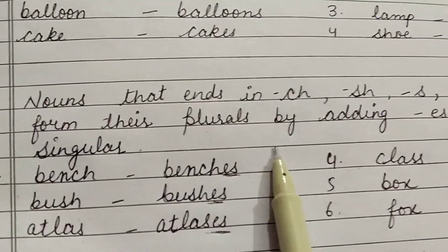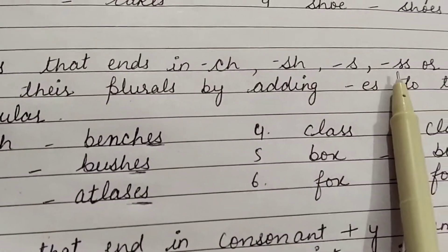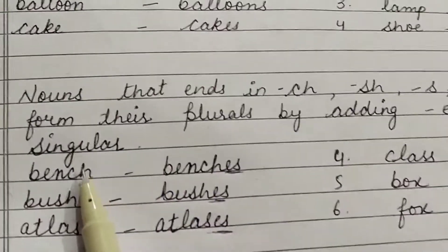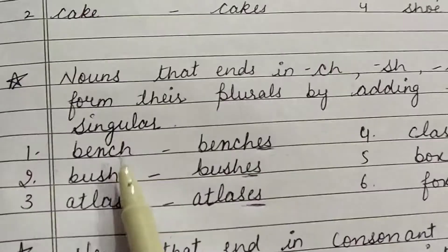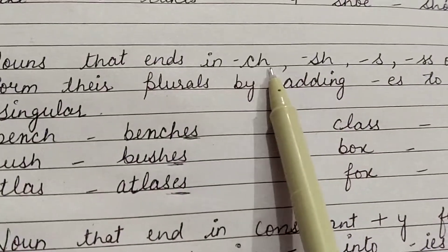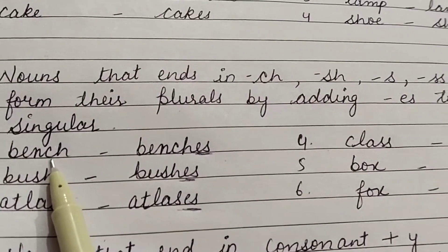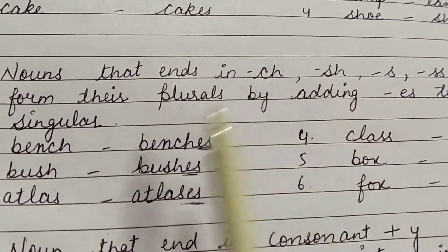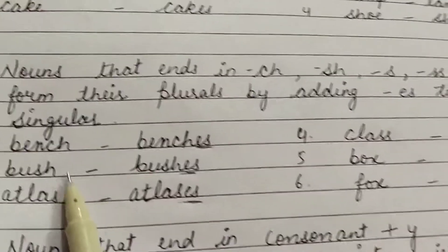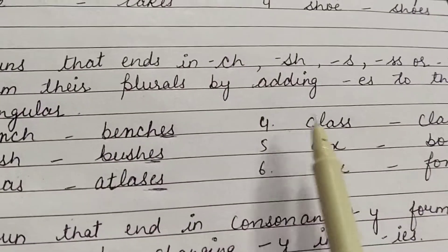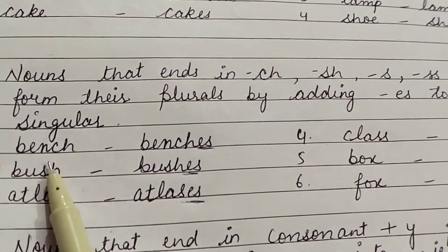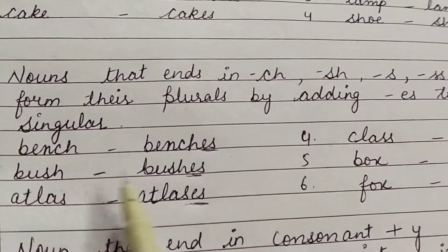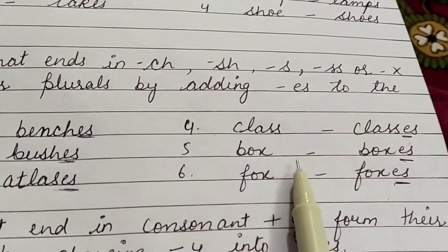Next, nouns that end in -ch, -sh, -s, or -x form their plurals by adding -es to the singular. For example: bench → benches, bush → bushes, atlas → atlases, class → classes, box → boxes.